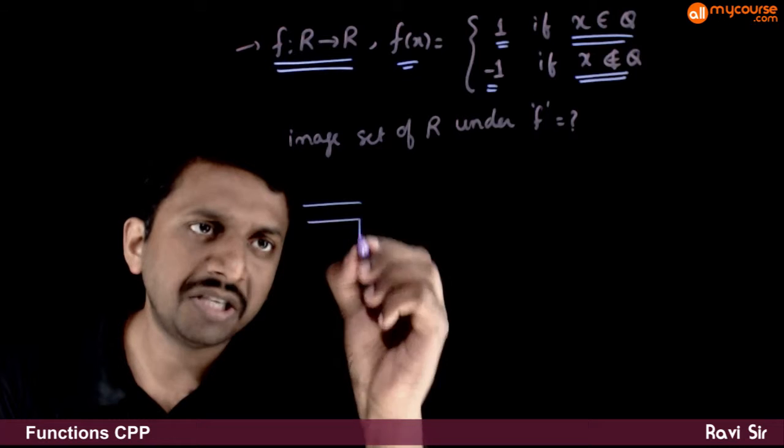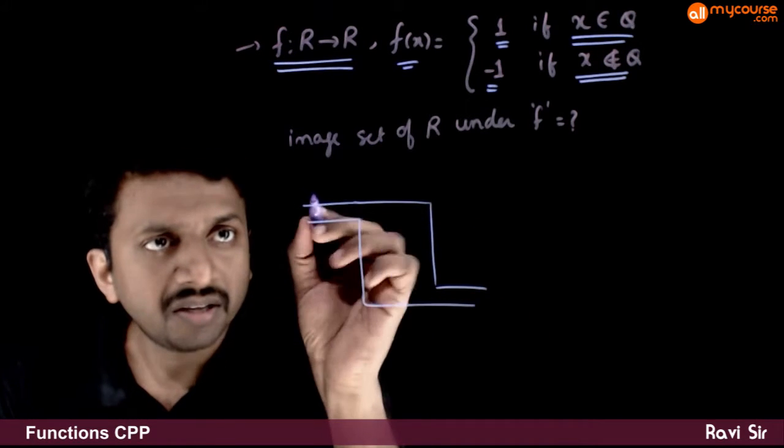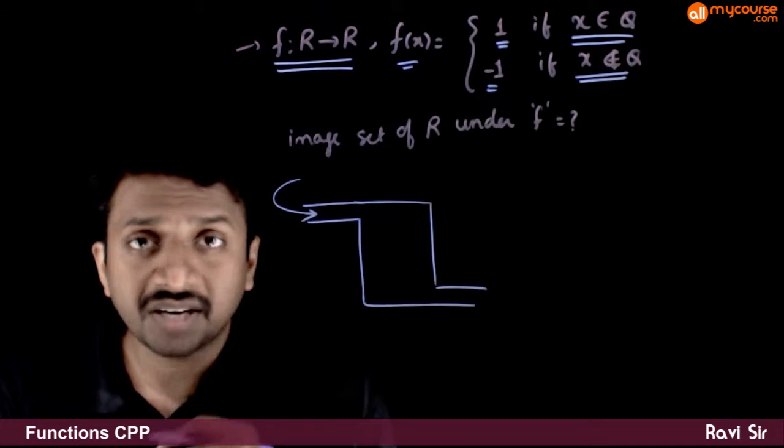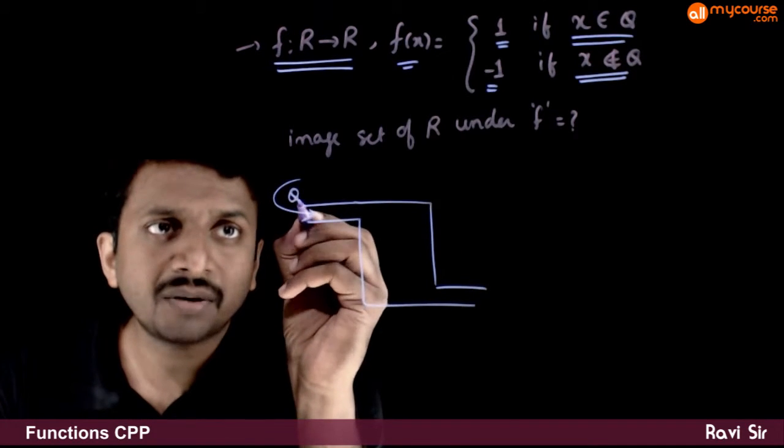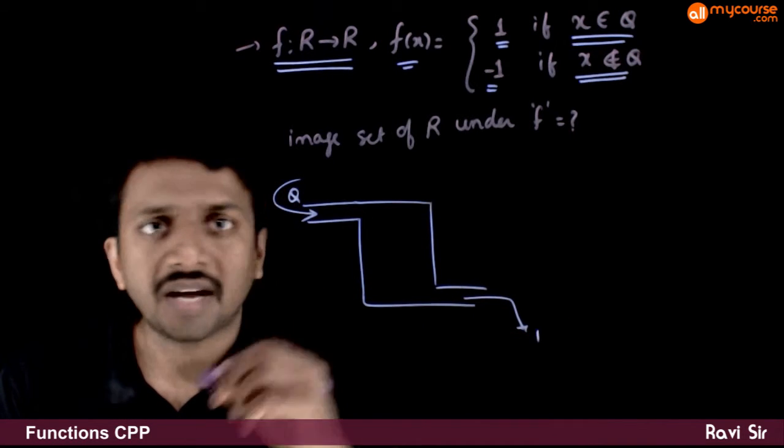That is, if you take a machine here, think of this function as a machine. So, what this machine does is, what this function does is, if a rational number goes inside this machine, it gives you 1 as the answer.